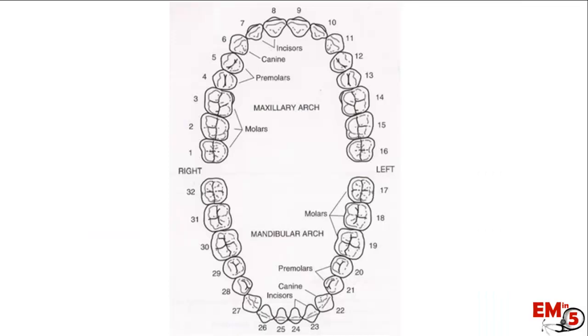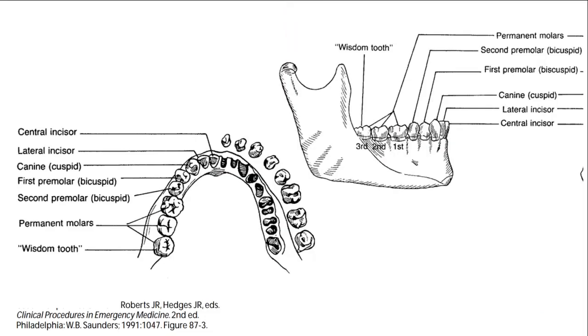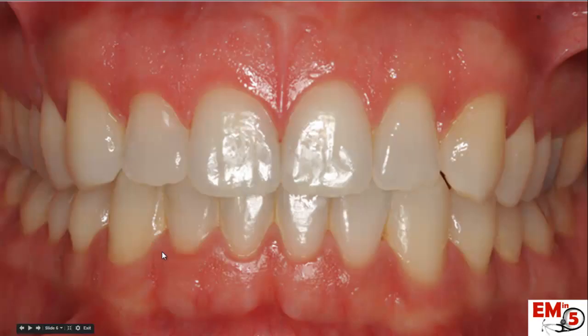First let's talk about how to identify that tooth and describe it well to the dentist for their follow-up. There's this numbering system, which I think is a little difficult to remember. I think this works a lot better, so let's try to identify those on this mouth.